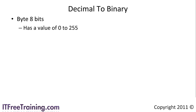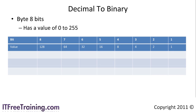To convert a decimal to binary I use the following table. Each bit in the table has a value assigned to it. Going from right to left, the first position has a value of 1, the second position has a value of 2, twice the previous value, the third position has a value of 4. As you can see, the values double in each position until the final value is 128.